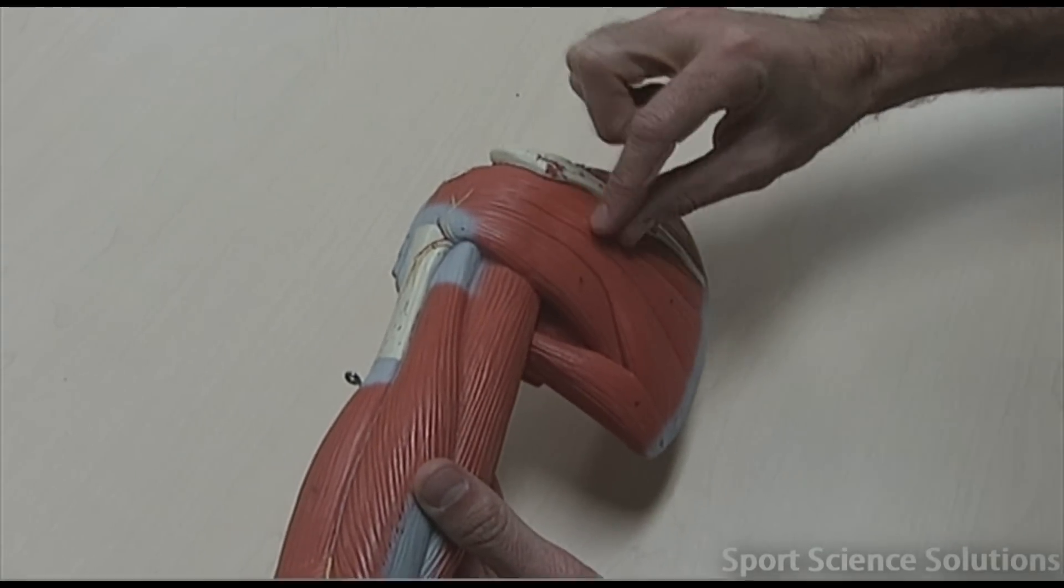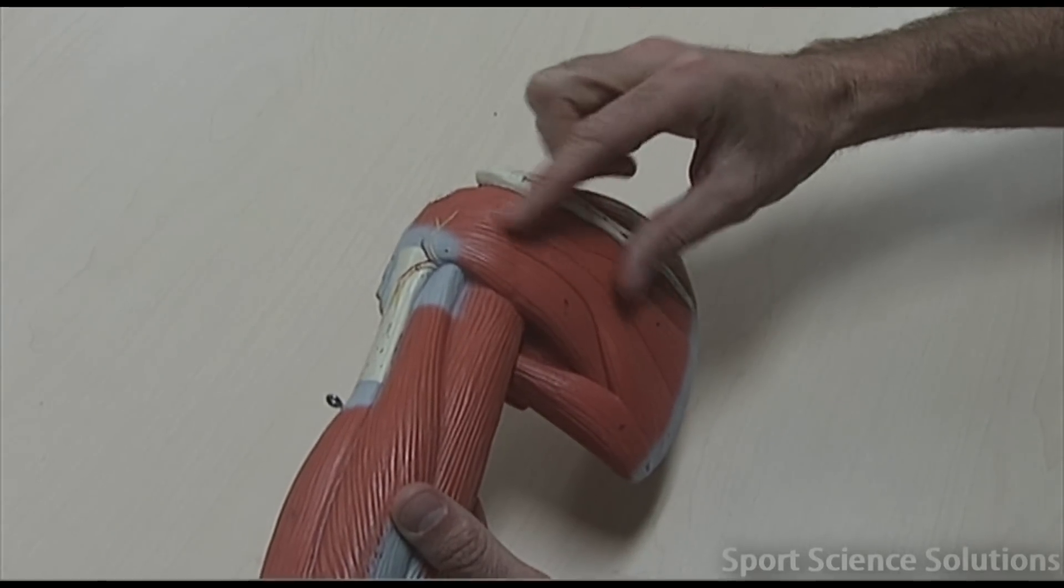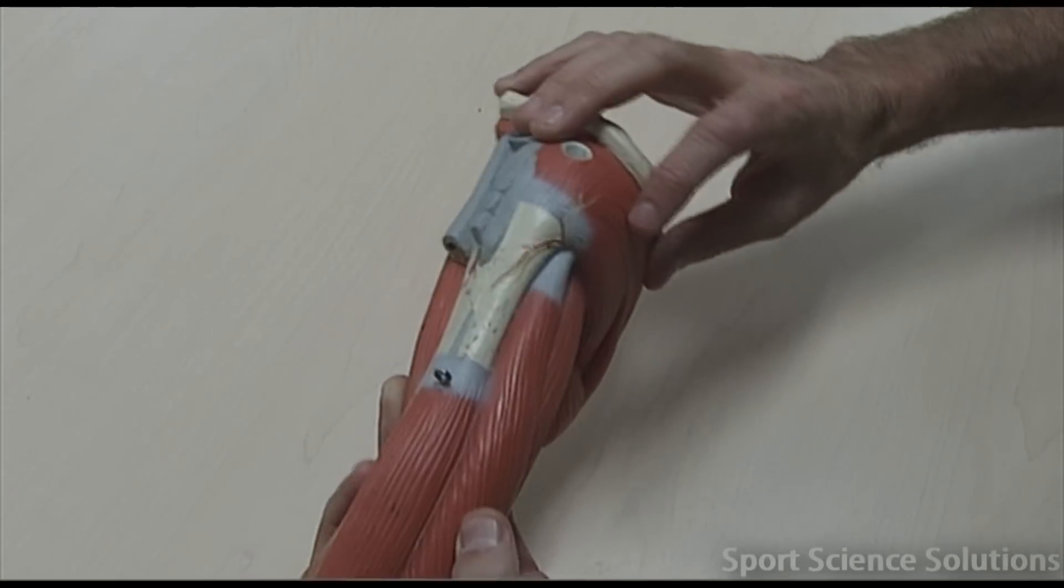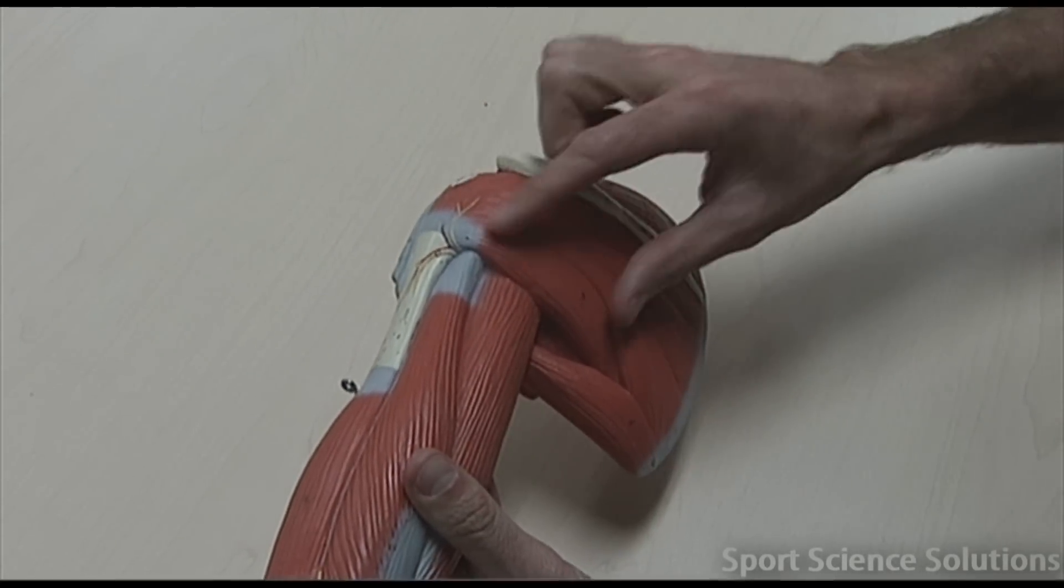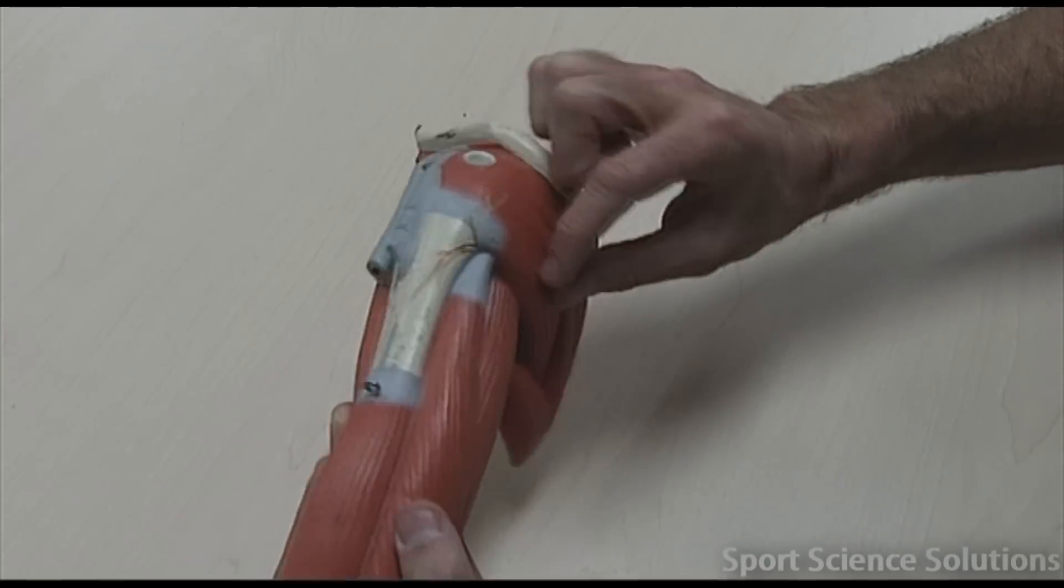the muscles here on the back of the arm, we know that muscle can only shorten. If the muscles here shorten, so the infraspinatus gets shorter, the arm would laterally rotate. Same with the teres minor. If the teres minor were to shorten, the arm would laterally rotate.